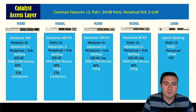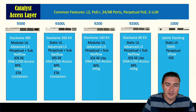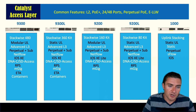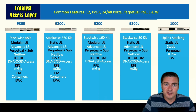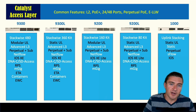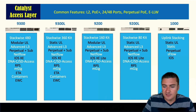Containers are possible on the 9300s. You can load applications like Wireshark or Perfmon right onto the switch. And because they support containers, you can also run the embedded wireless controller — the 9800 — directly on your 9300 switches, so you don't need a separate wireless controller for a branch office.